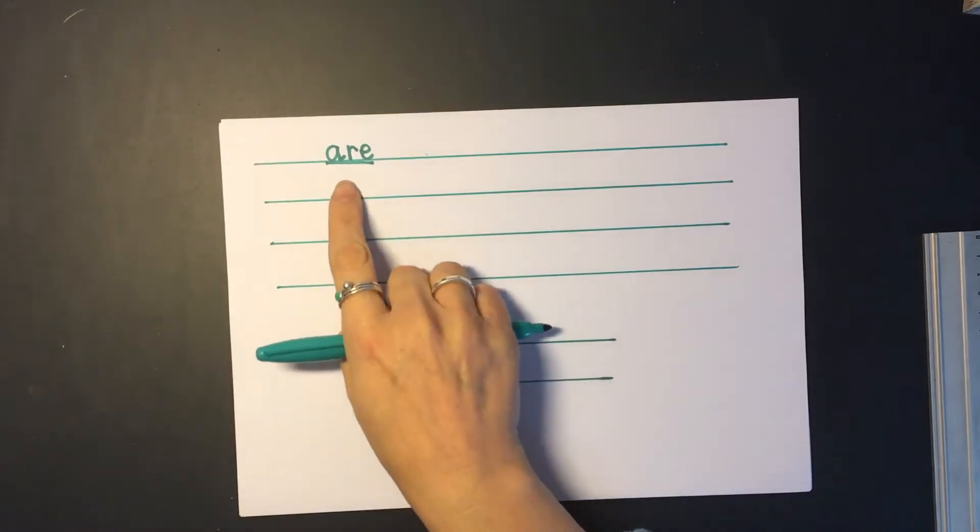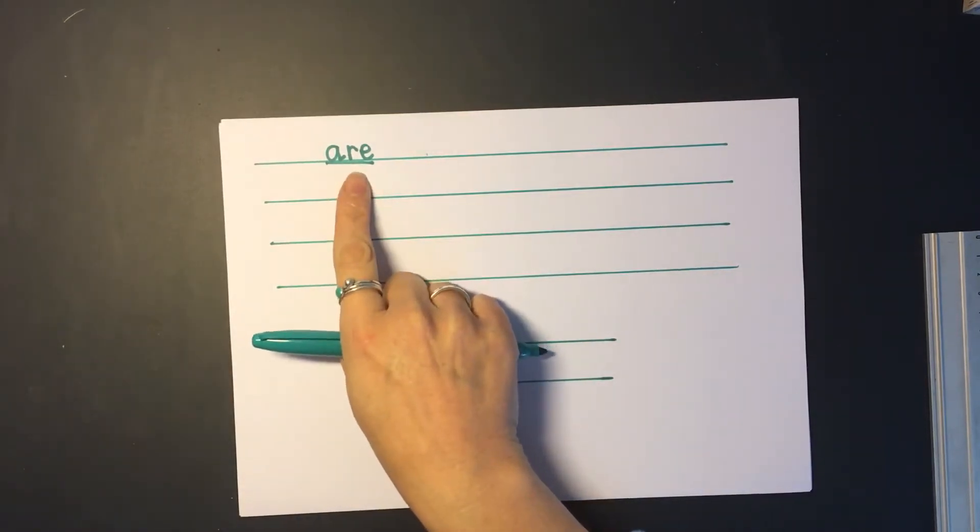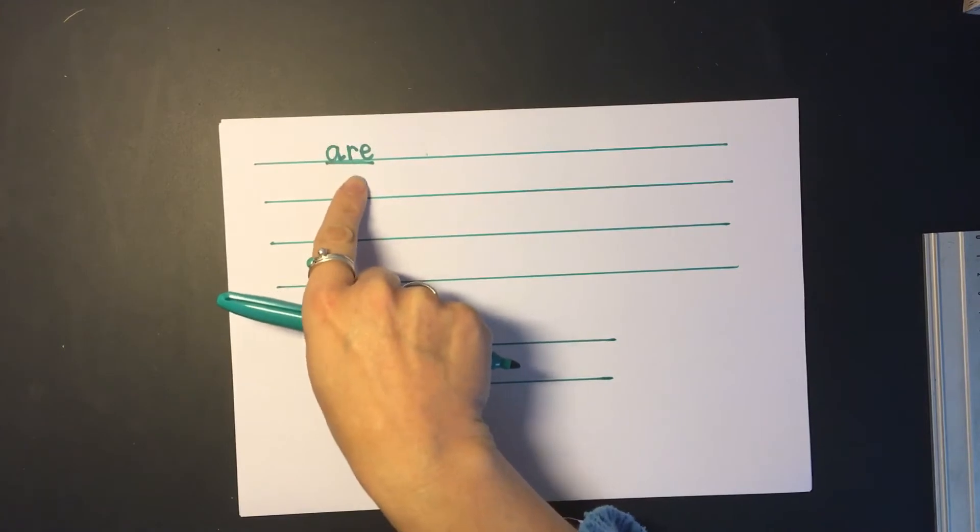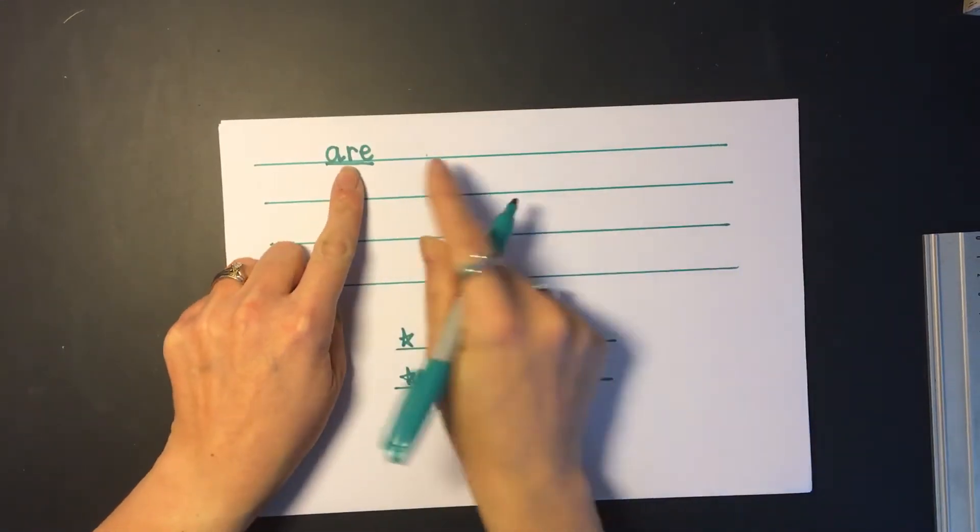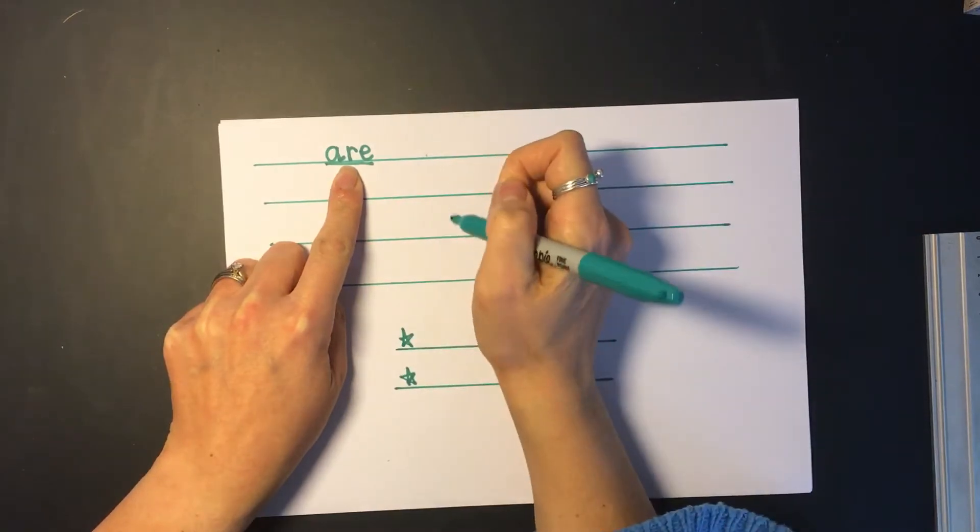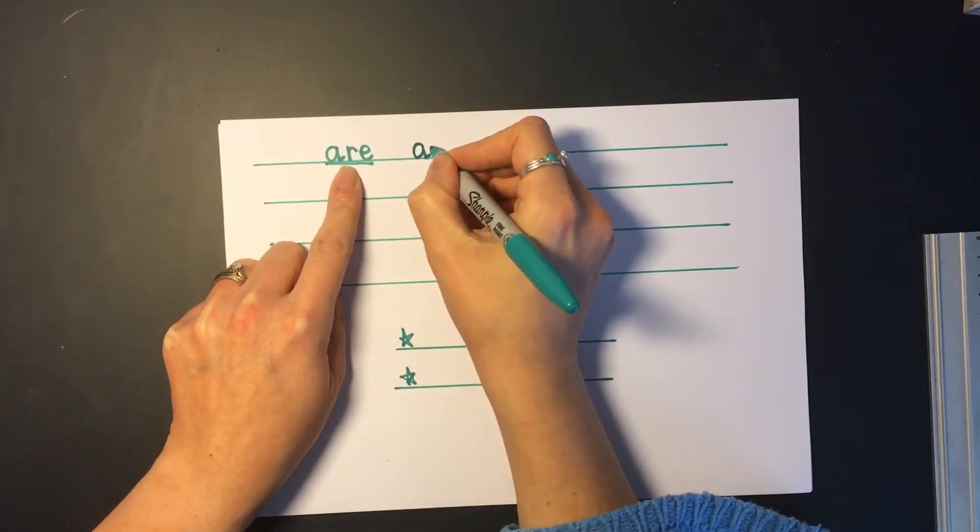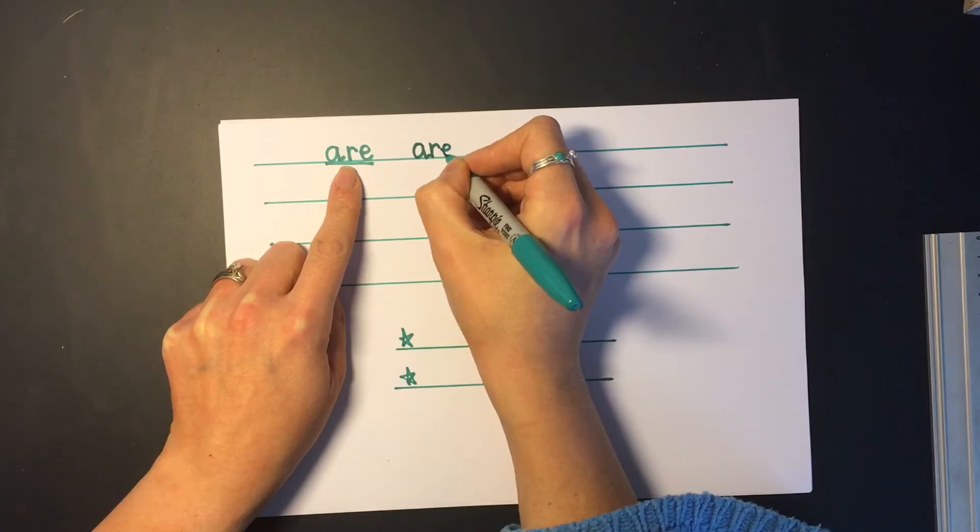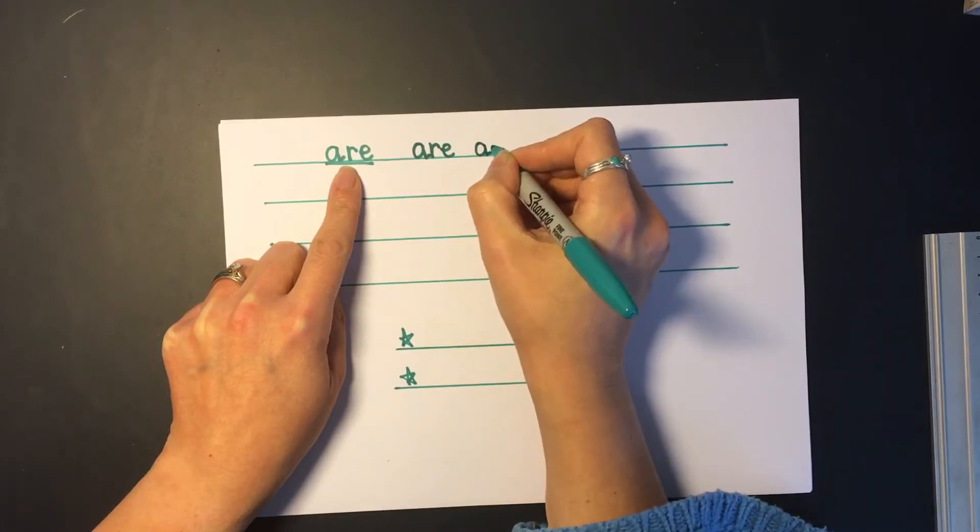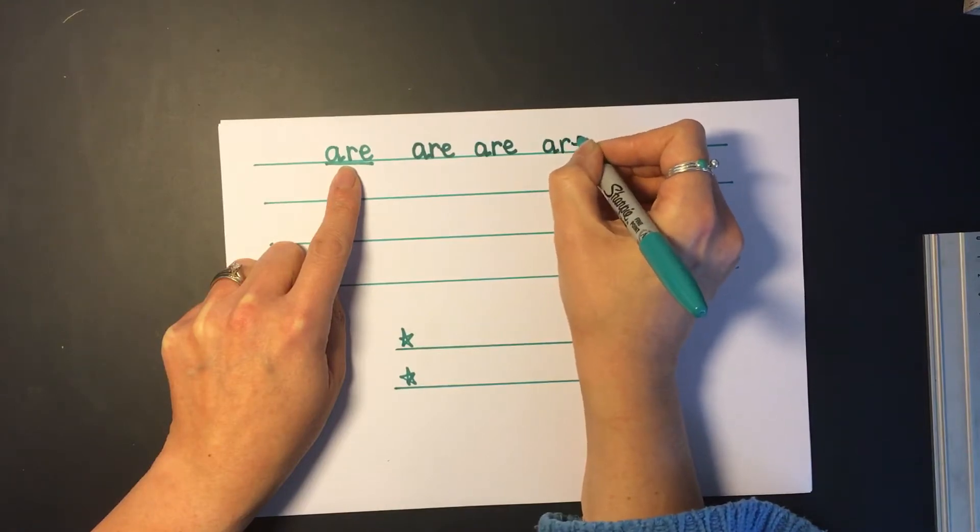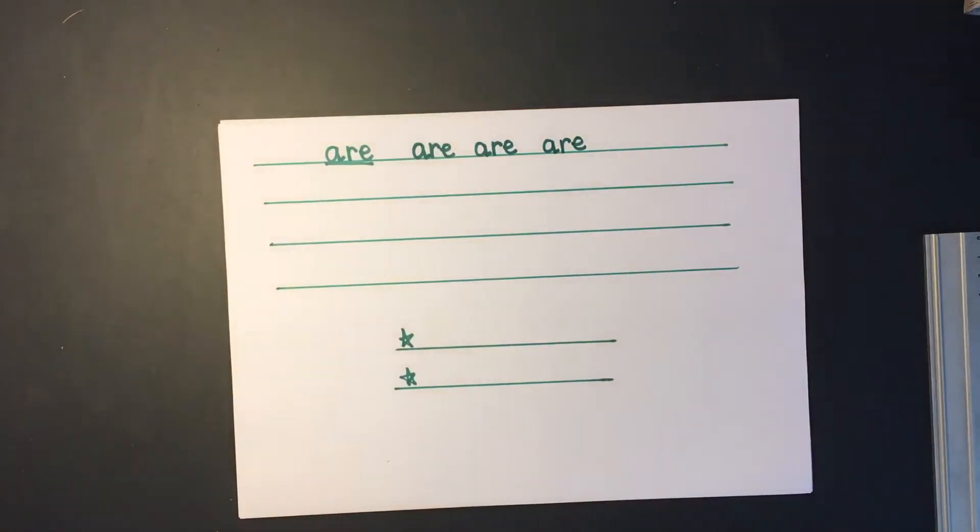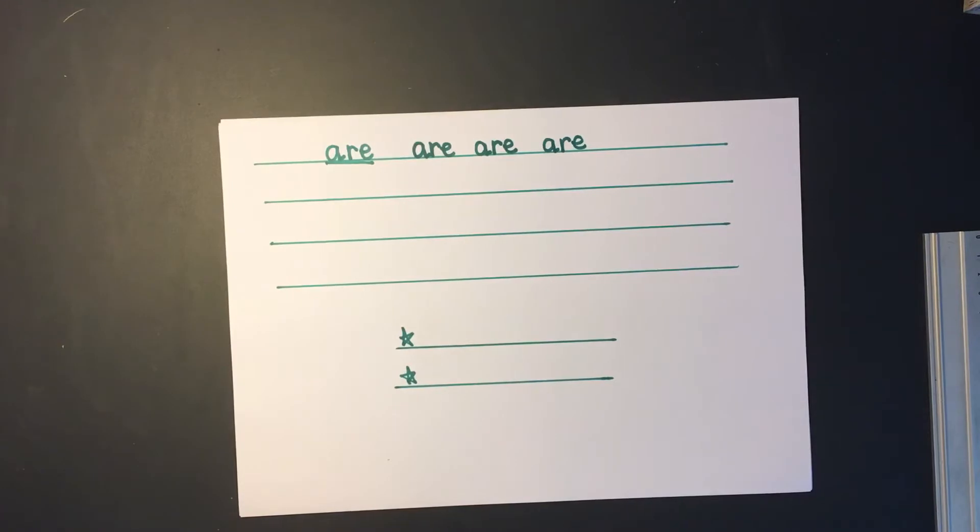Now in the reading video we talked about how this is a bit tricky because when this word is on its own it says R but when you see these special friends together in a word it makes the air sound. So let's have a practice. Let's write air four times along the top, see if you can snuggle your letters together nicely and then give me a space A-R-E. A-R-E. Pause the video now if you need a bit more time.